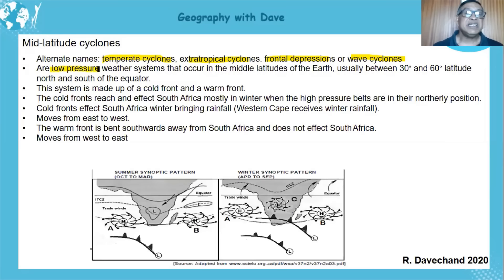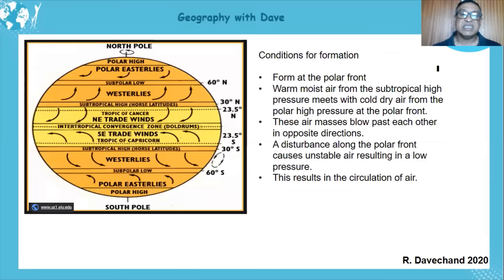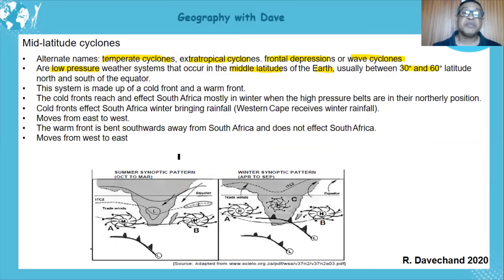We need to know that it is a low pressure system and it occurs in the middle latitudes of the earth, usually around 30 to 60 degrees. It occurs north and south of the equator, on both sides.